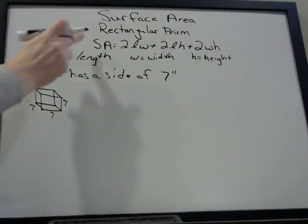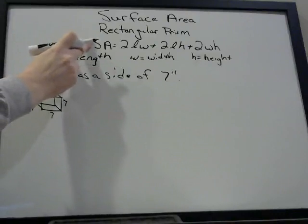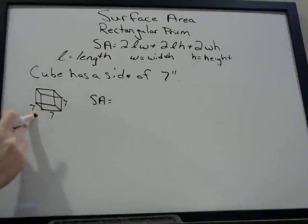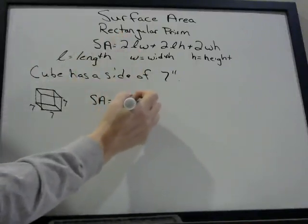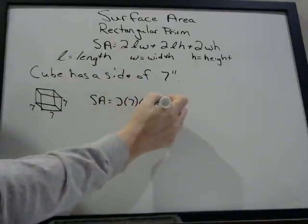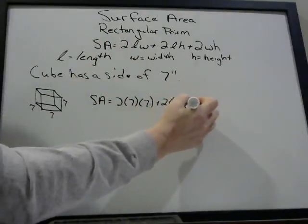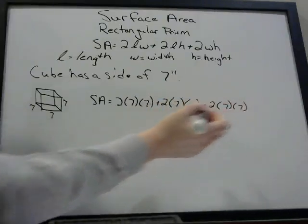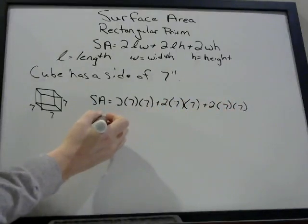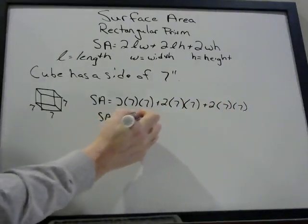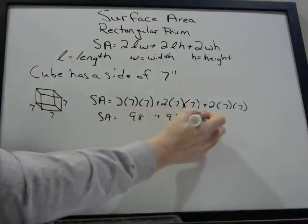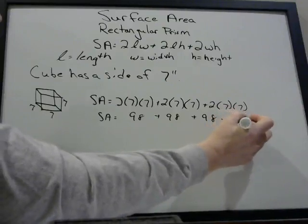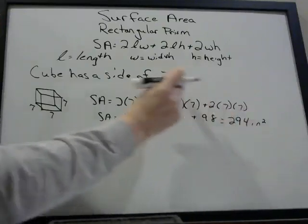Once we have the length of one side, we know the length of all of the other sides, because they are all the same. We can use the same exact formula. So we just plug the numbers in: 2 times 7 times 7, plus 2 times 7 times 7, plus 2 times 7 times 7. Each of those gives us 98, so 98 plus 98 plus 98 equals 294 inches squared.